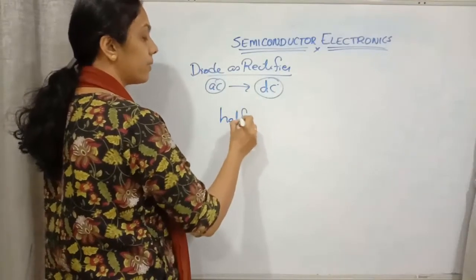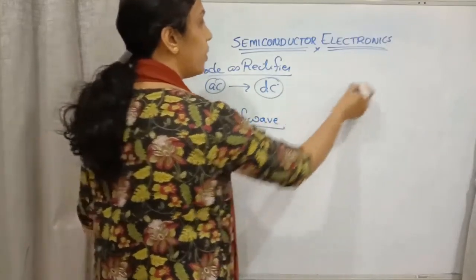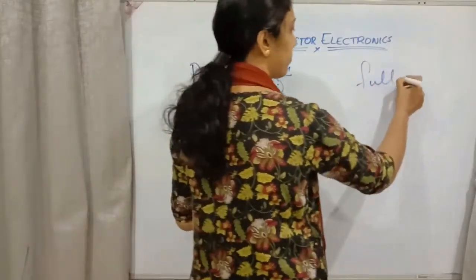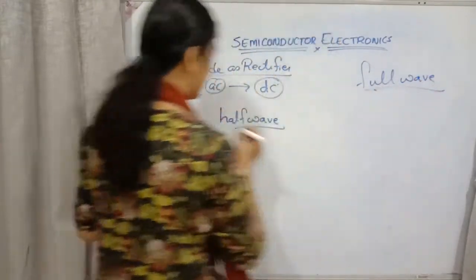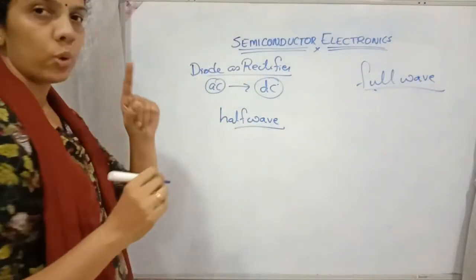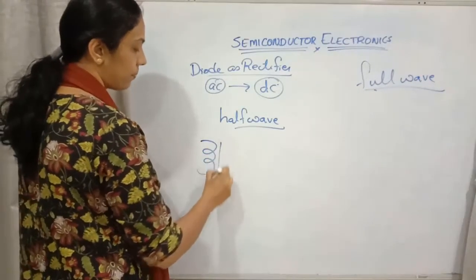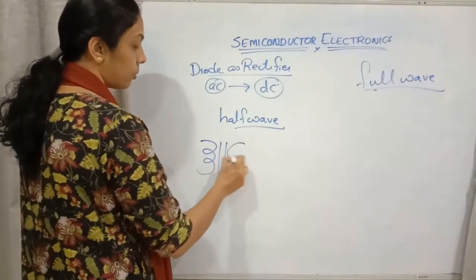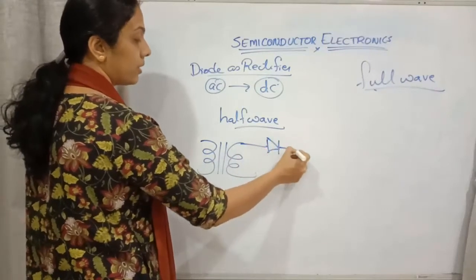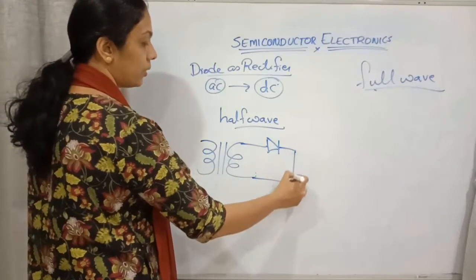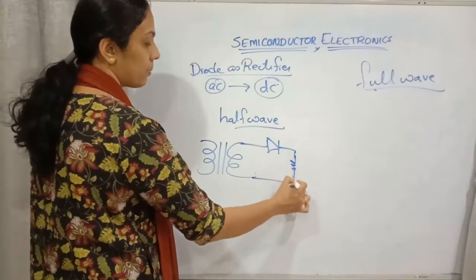There are two types of rectifiers: half wave rectifier and full wave rectifier. For a half wave rectifier, we require only one PN junction diode. From the output of the transformer, we connect one PN junction diode, and a load resistance is connected at the output.